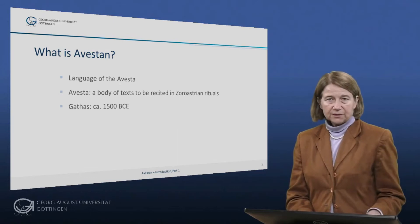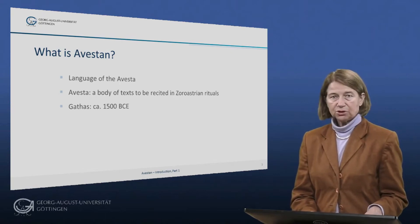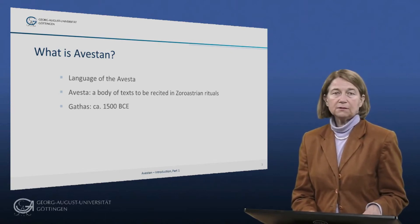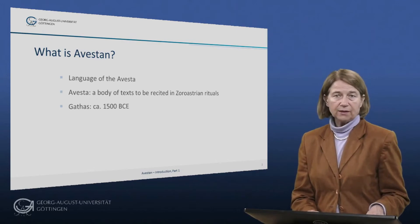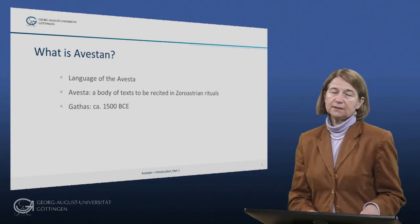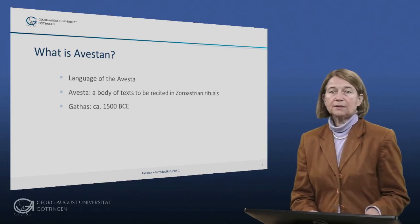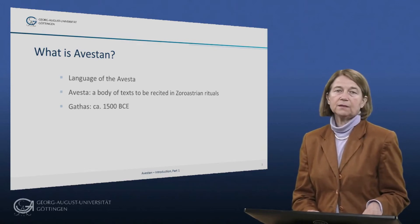What is Avestan? We have no absolute dates for any of these texts, but most scholars think that the oldest of them, the so-called Gathas of the Zarathustra, were composed around the middle of the second millennium BCE. This makes Avestan not only the earliest witness of any Iranian language, but also places it amongst the oldest attested Indo-European languages alongside Vedic Sanskrit and Mycenaean Greek, and only a few centuries later than the earliest documents of Hittite.